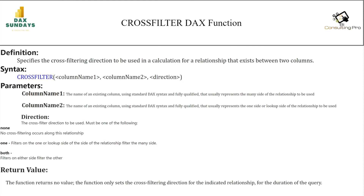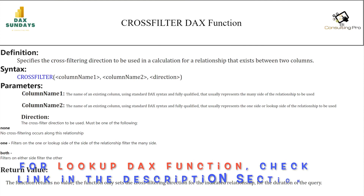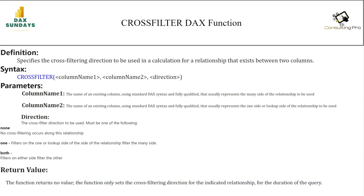The CROSSFILTER DAX function has the syntax: CROSSFILTER(column one, column two, direction). Direction can be one, none, or both. Column one is the name of an existing column using standard DAX syntax, fully qualified, that usually represents the many side of the relationship. Column two is the name of an existing column, fully qualified, that usually represents the one side or lookup side of the relationship. Remember that dimensional tables are at the one side of the relationship and are the lookup side.